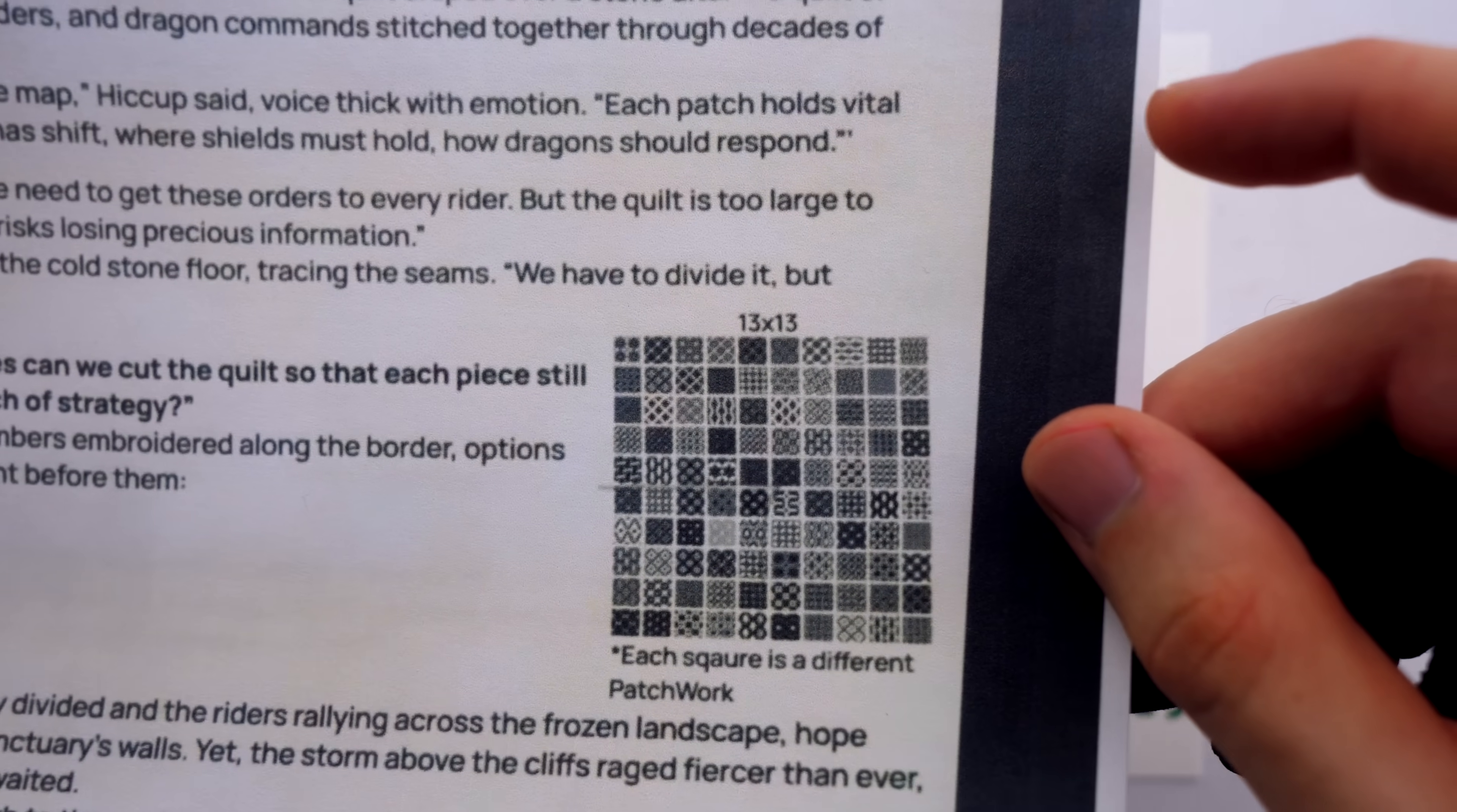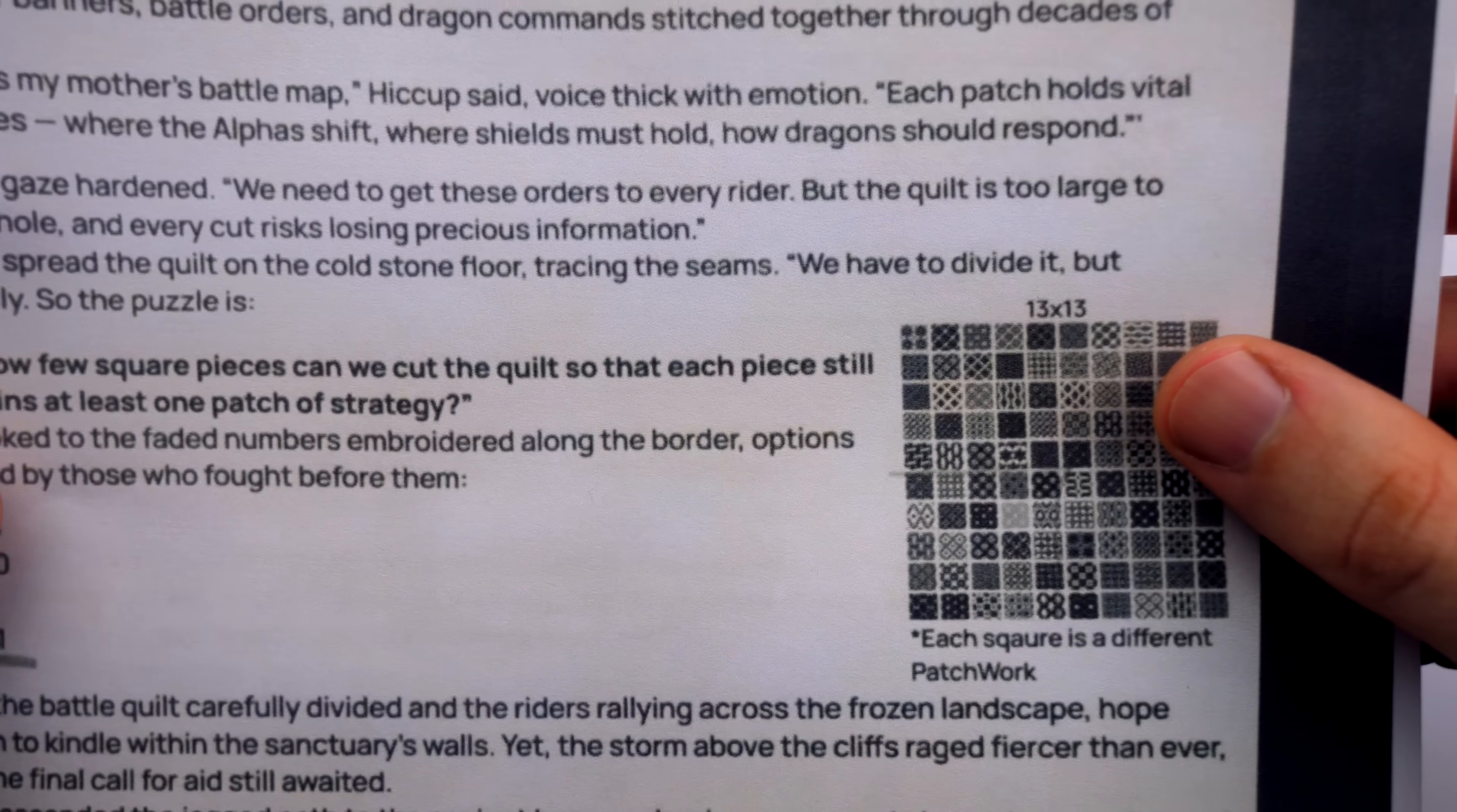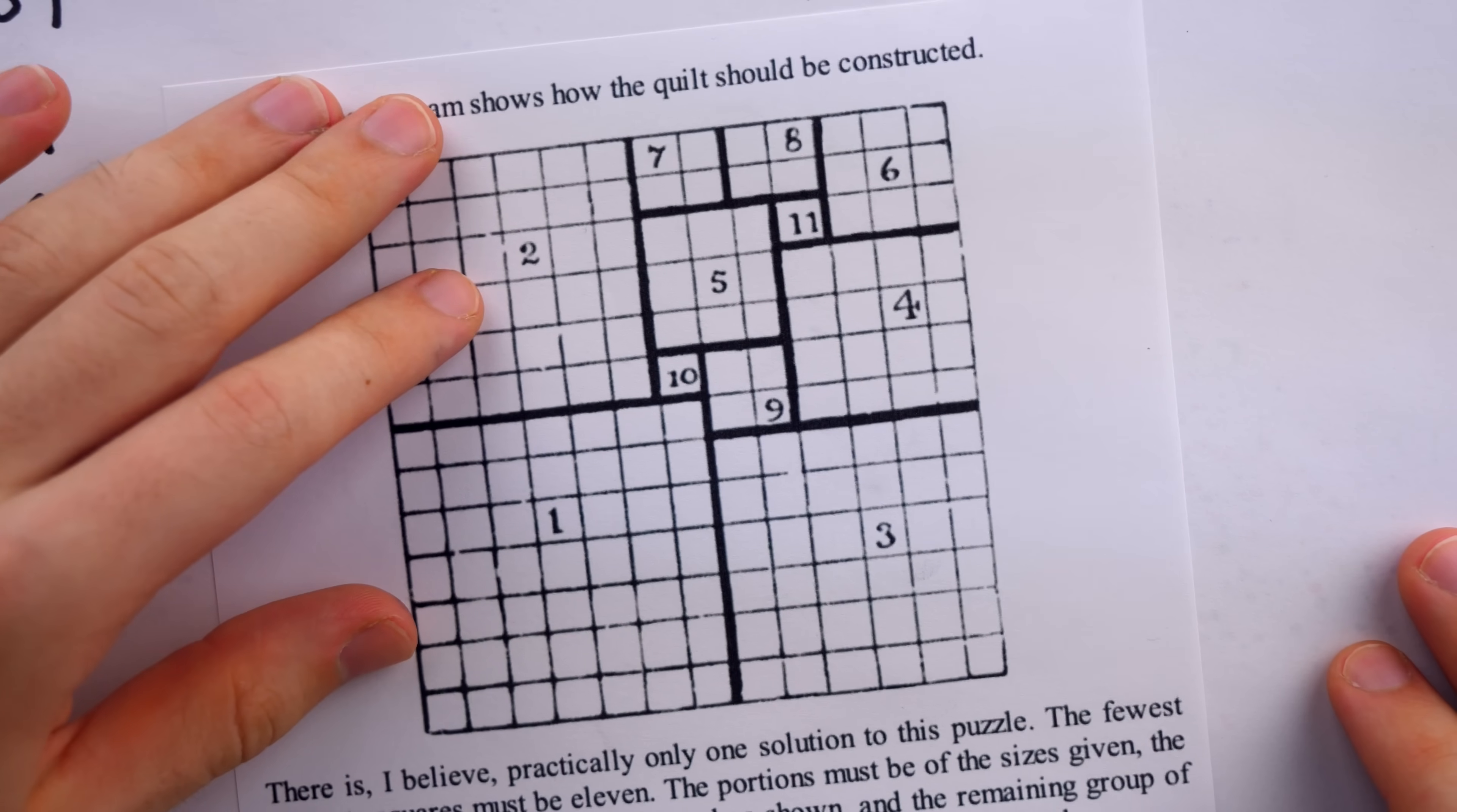You might think that confirms that it was supposed to be asking about 13x13 quilts since the correct answer for the 13x13 case is here. But in fact, if it was a 10x10 quilt that we're cutting, the correct answer is, again, 11. So I'm not 100% sure which size they wanted us to consider. I would guess 13x13 though, since that's the size that Dudeney used in the famous puzzle. Alright, pause now, if you don't want to see the optimal solution yet, 3, 2, 1, here it is.